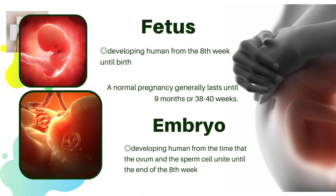A fetus is the developing human from the time that the ovum and sperm cell unite until the end of the 8th week. An embryo is the developing human from the 8th week until birth. A normal pregnancy generally lasts 9 months, or 38 to 40 weeks.